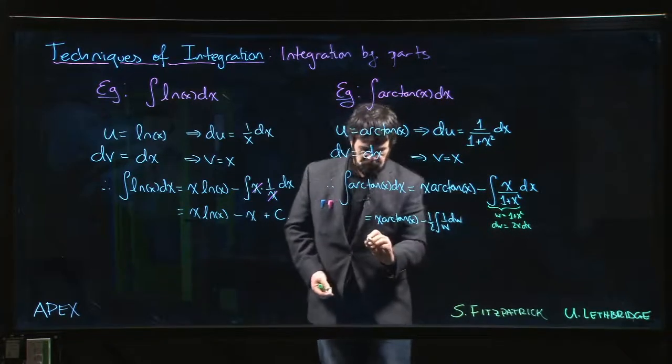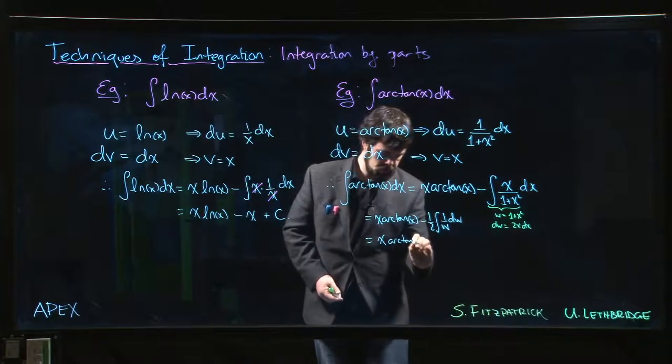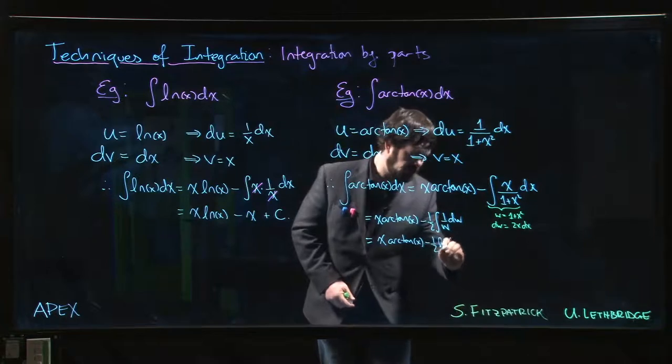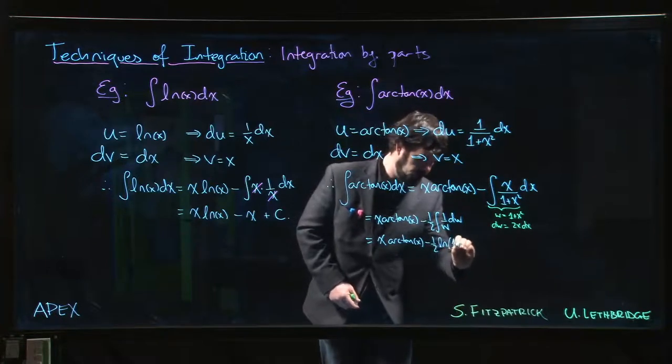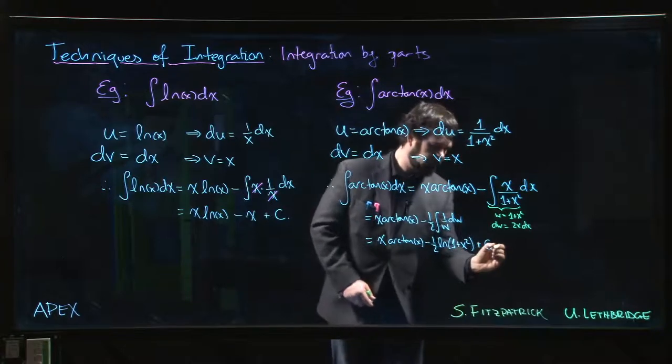And of course that's the natural log. So we get x arctan of x minus 1 half times the natural log of 1 plus x squared plus our constant.